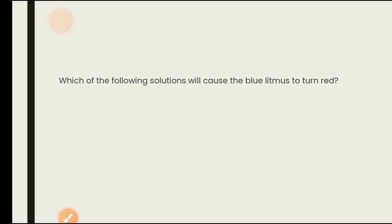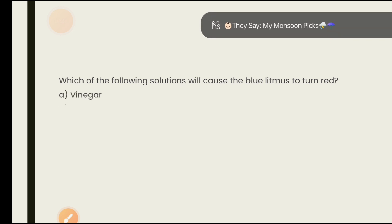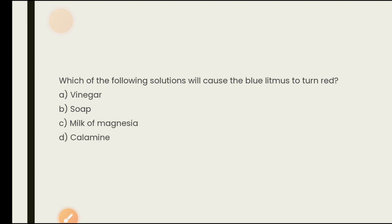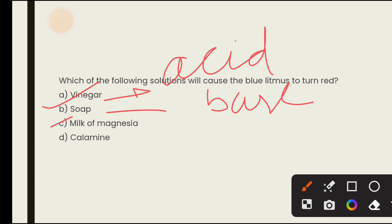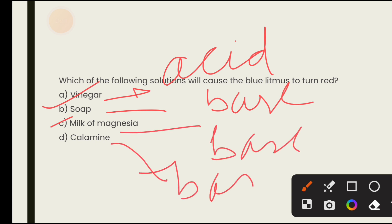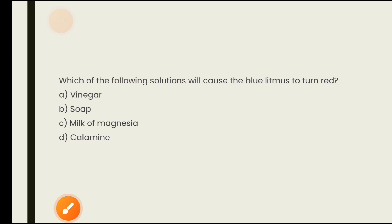Next question: which of the following solutions will cause blue litmus to turn red? Options are vinegar, soap, milk of magnesia, calamine. If blue litmus turns red, it means the substance is acidic. Vinegar is an acid, soap is a base, milk of magnesia is a base, and calamine is a base. Since vinegar is acidic, it will change the blue litmus to red color. So the answer is vinegar.